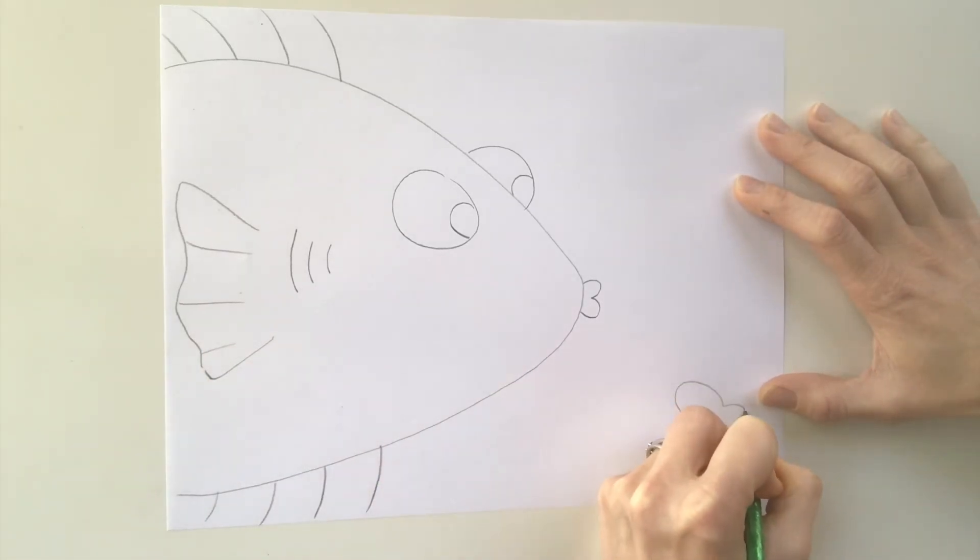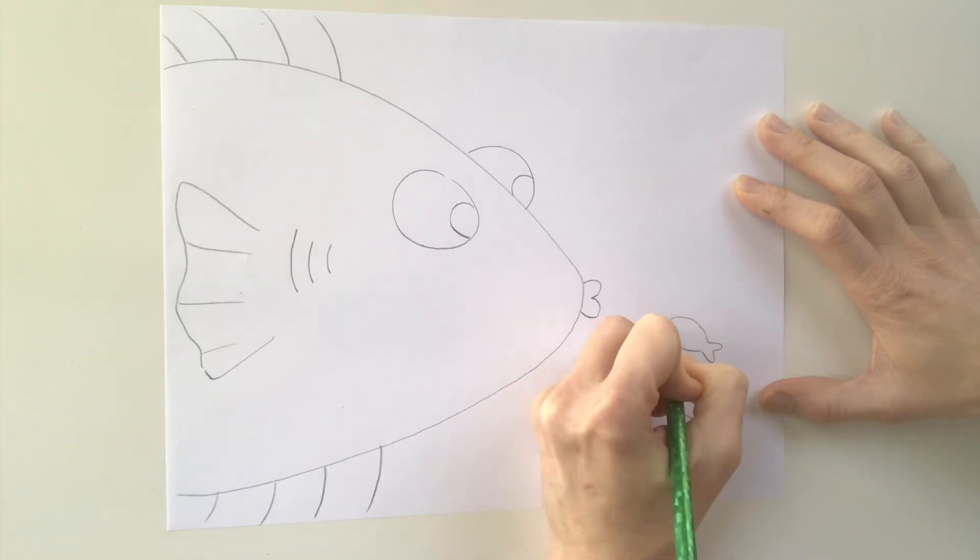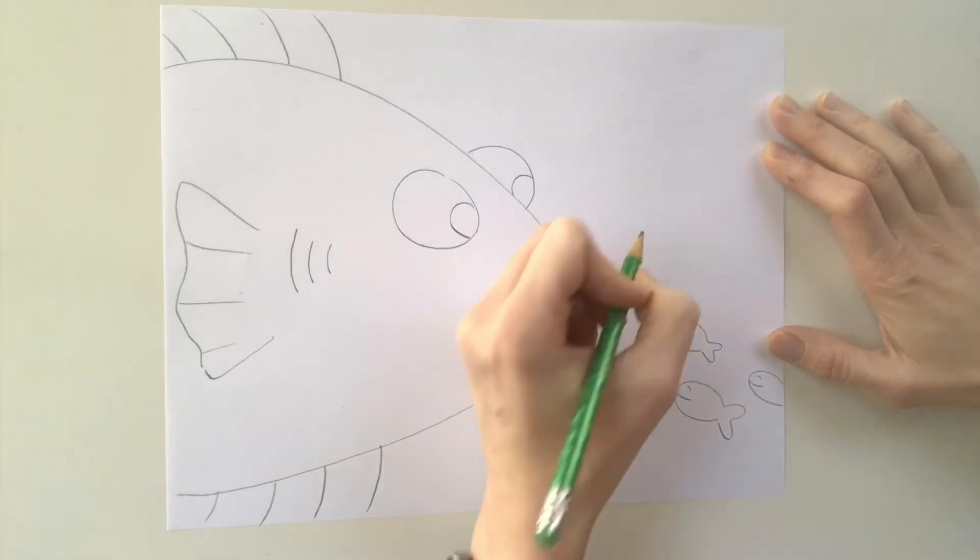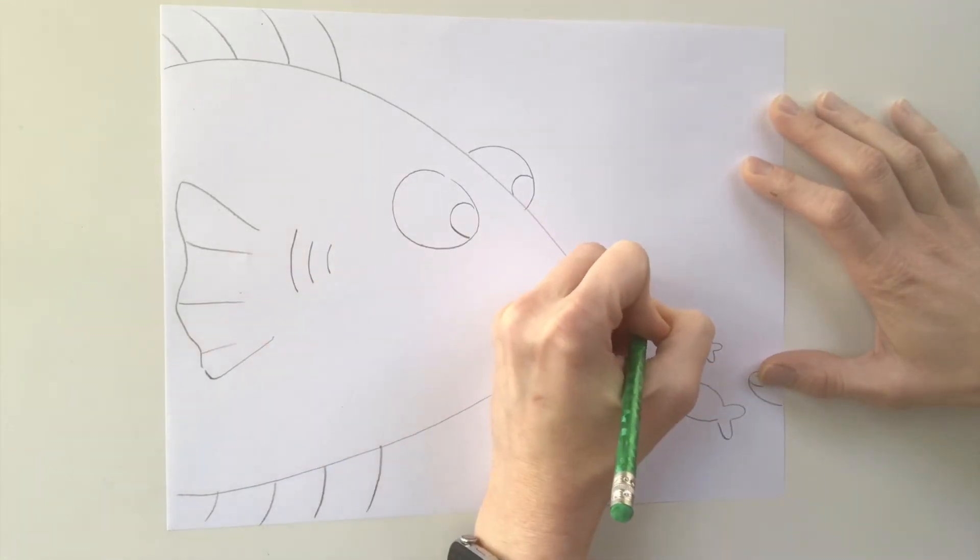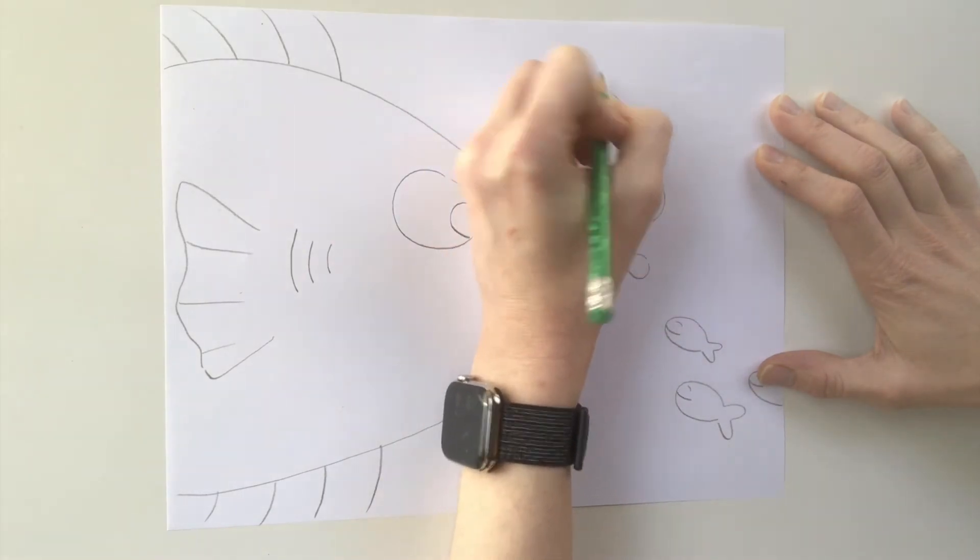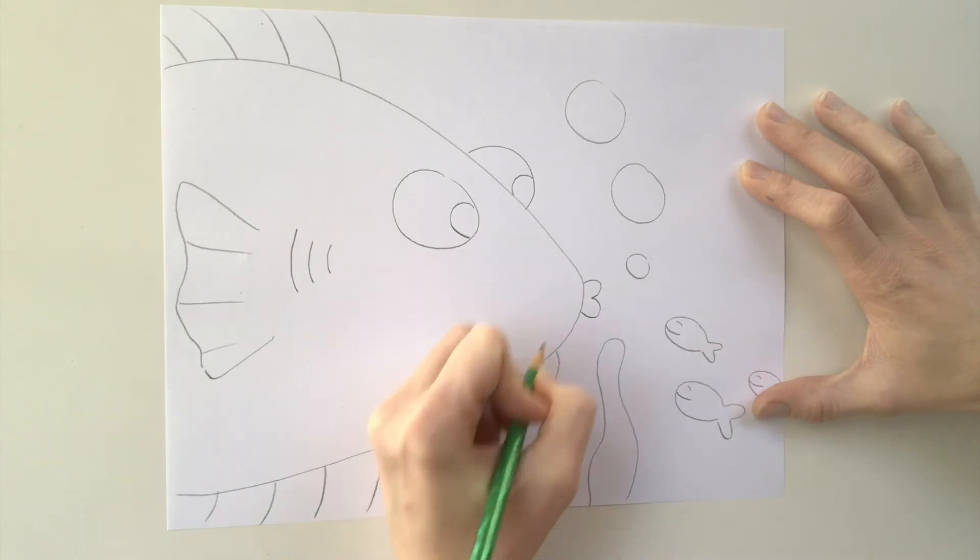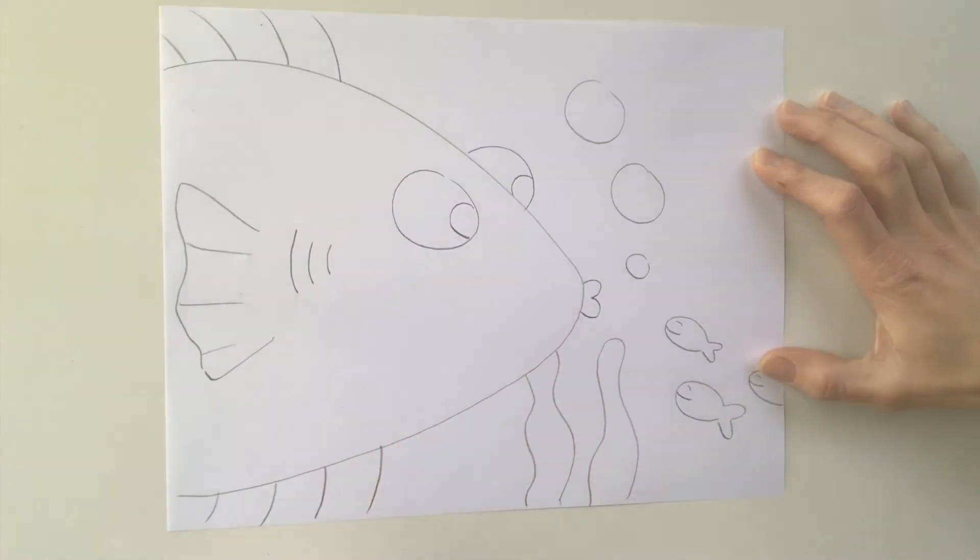Now I'm adding some little fish friends. So all I'm doing is I'm starting like an oval and then wiggling out at the end. I want it to look like things are coming into the picture. We're very close and zoomed in. Some bubbles and some little seaweed to make it look more realistic.